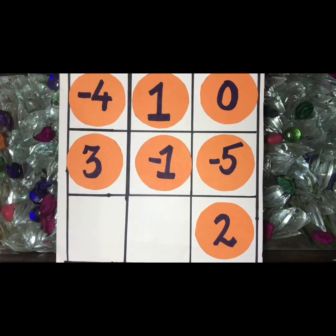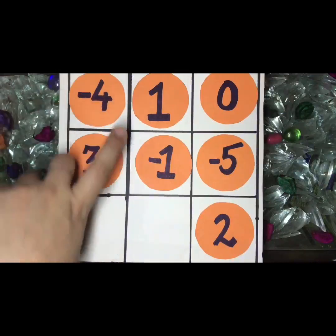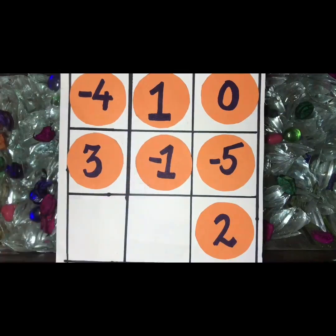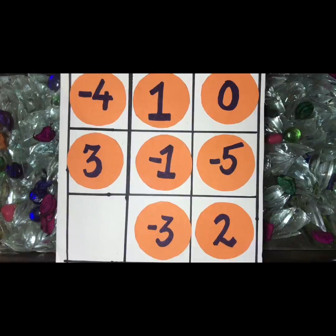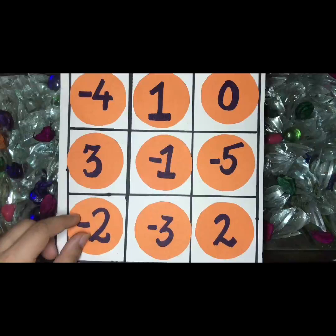Now we are smart enough to complete this row. 1 minus 1, the answer is 0. Similarly, for this we need minus 3. Now minus 3 plus 2, the answer is minus 1. Here we need minus 2. Then only we will get the answer as minus 3.